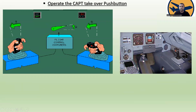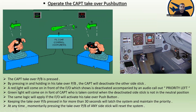Now, when the captain takeover push button is pressed and held, the captain will deactivate the other side stick. A red light comes on in front of the first officer indicating his side stick is deactivated, accompanied by the audio callout 'Priority Left.' A green light comes on in front of the captain, who has taken control. This applies even when the deactivated side stick is not in the neutral position.